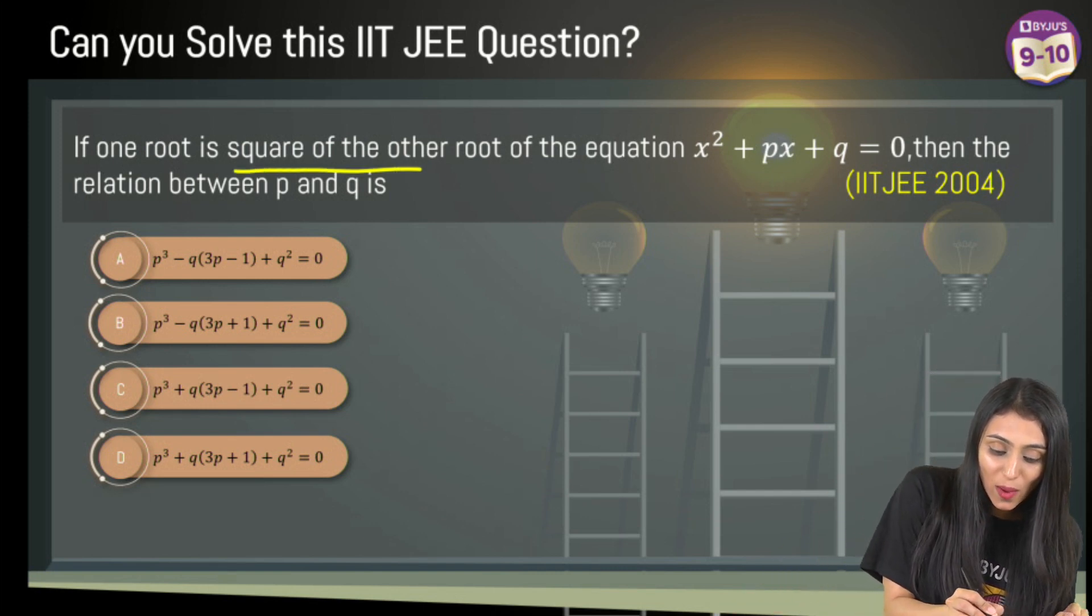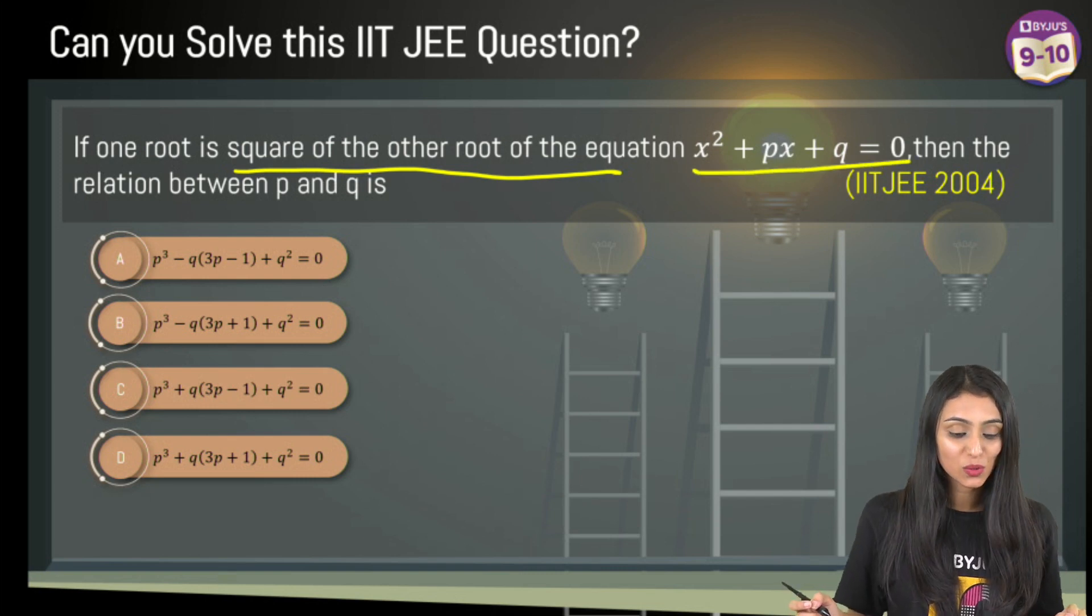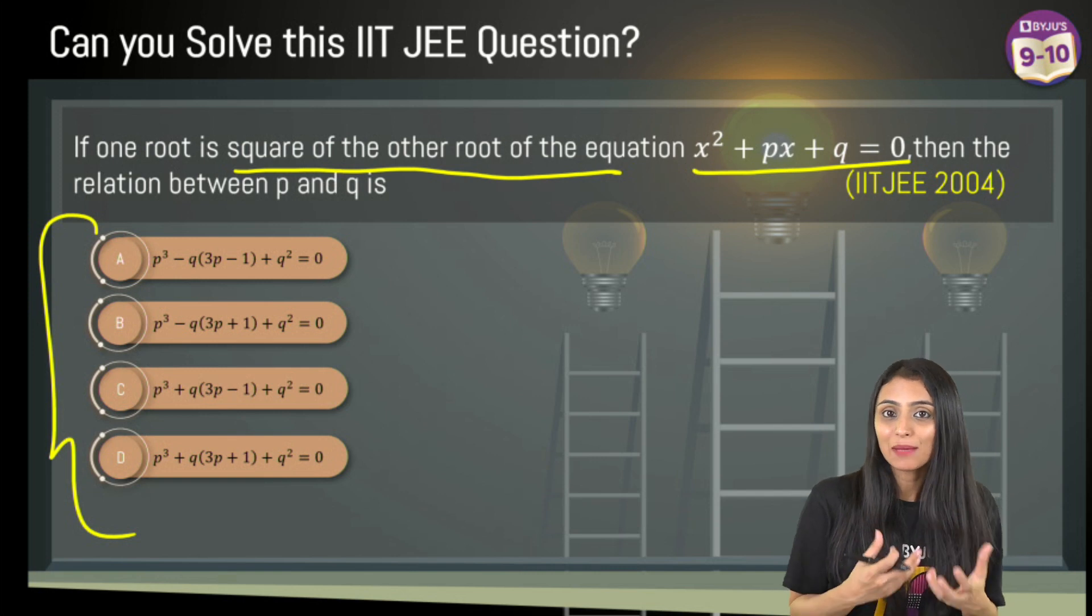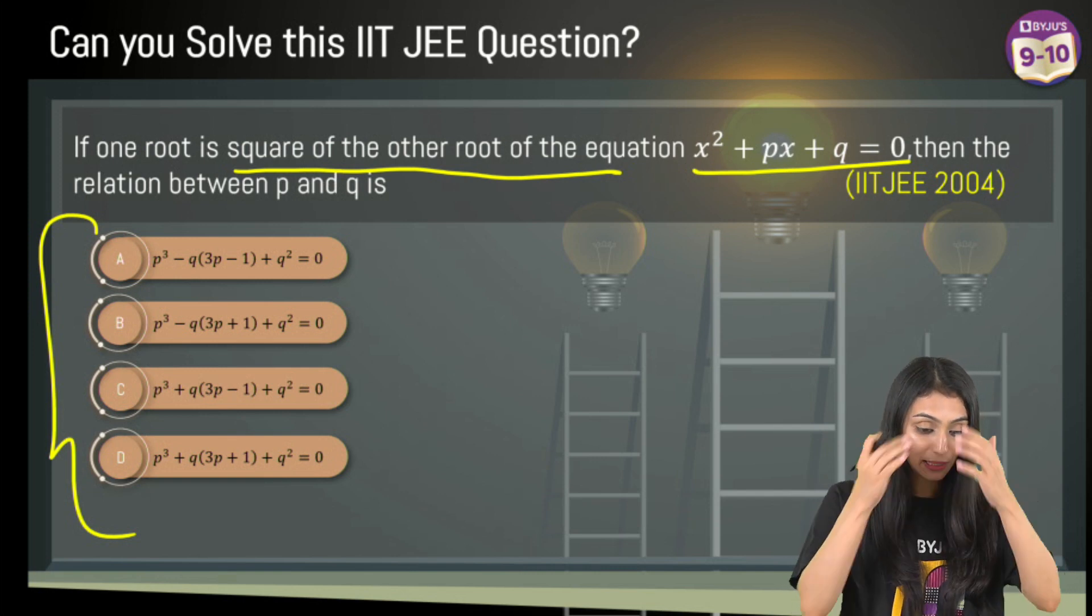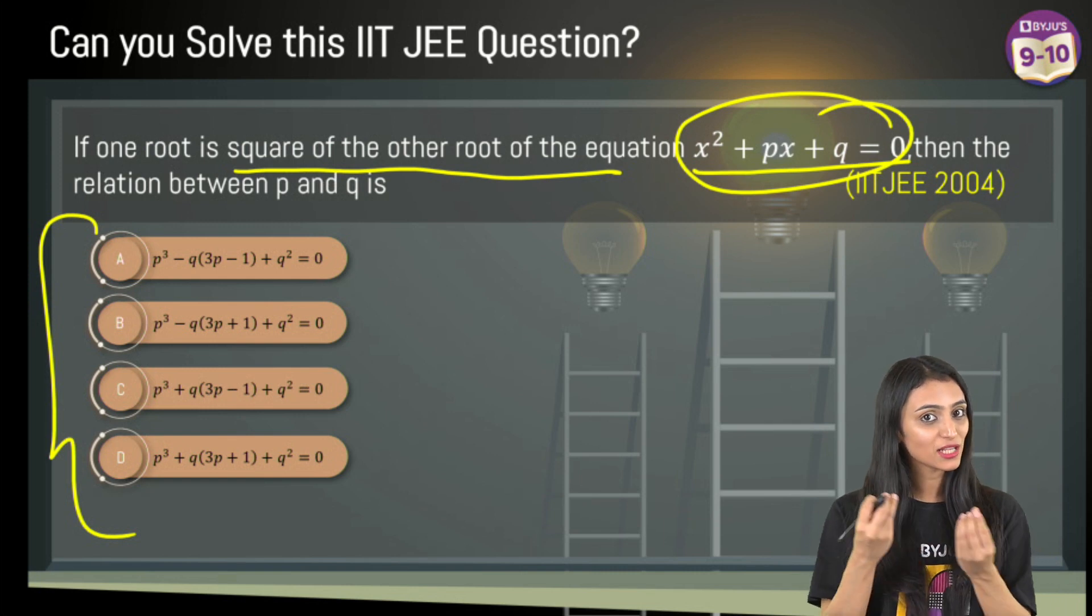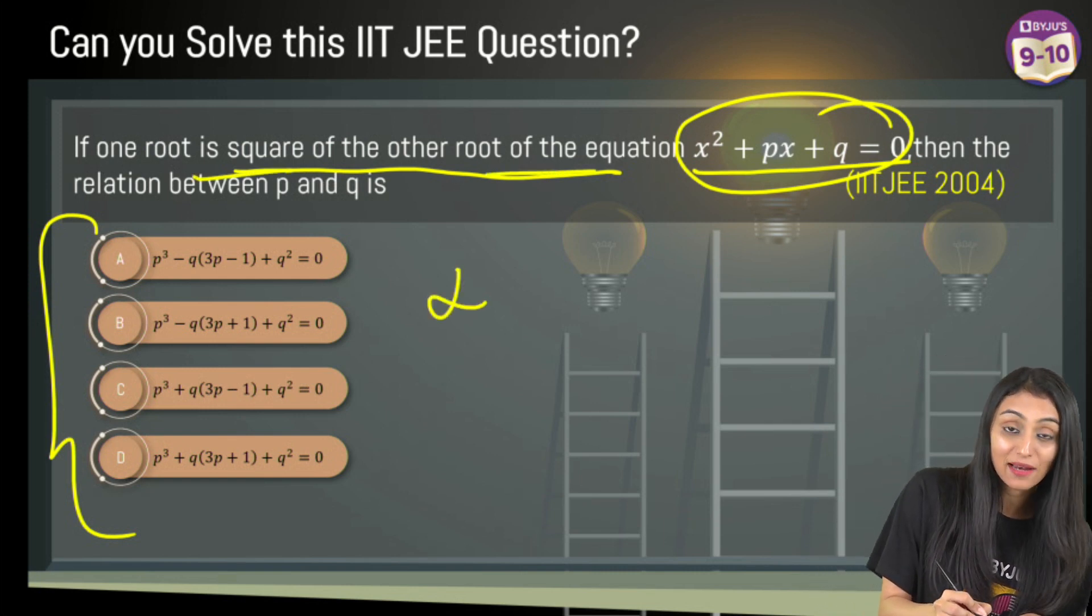The question states: if one root is square of the other root of the equation x² + px + q = 0, then the relationship between p and q is... We have four options, so it's an MCQ question. Now, a quadratic equation always has two roots. If one root is square of the other, let's suppose one root is alpha, the other one is alpha squared.